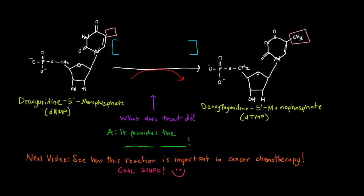We have DUMP, deoxyuridine 5' monophosphate, and deoxythymidine 5' monophosphate. The only difference is this doesn't have a methyl group and this one does. We're creating this thymine nucleotide, deoxynucleotide specifically.